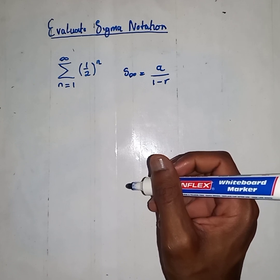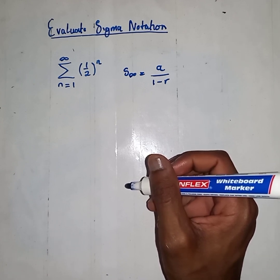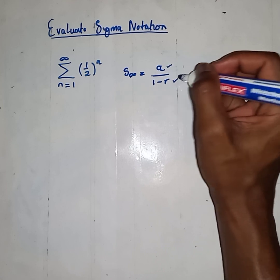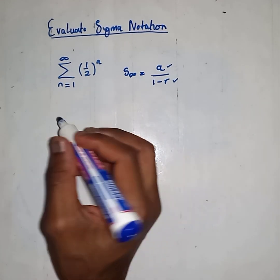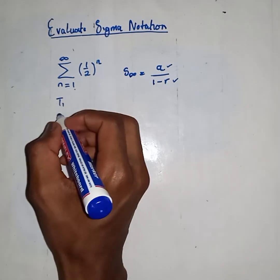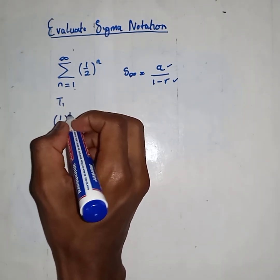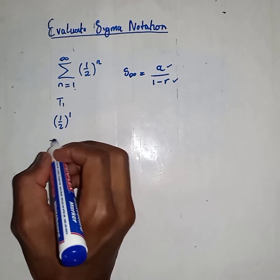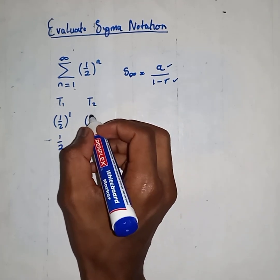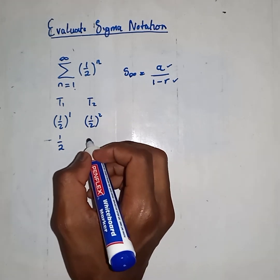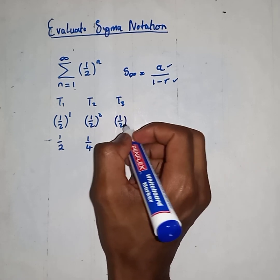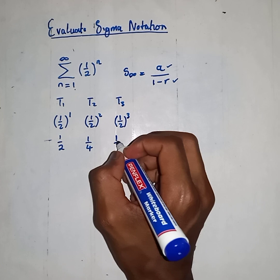For this one, we don't need to figure out the number of terms, because it's summed to infinity. The only things we need are A and R. For term 1, plug in n=1: you get 1/2. For term 2, plug in n=2: you get 1/4. For term 3, you get 1/8.